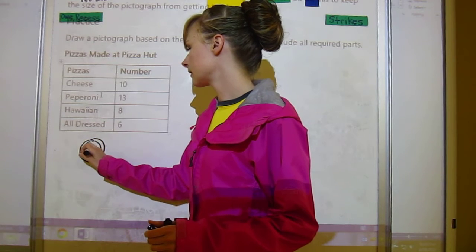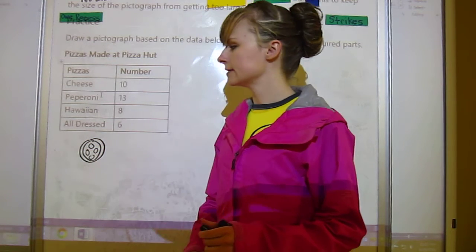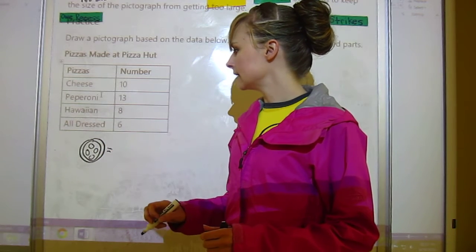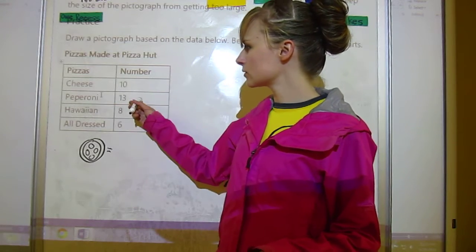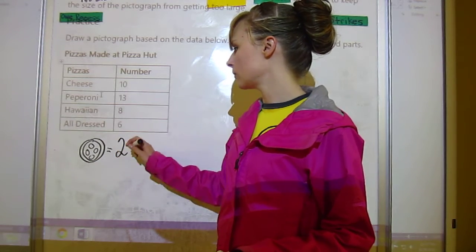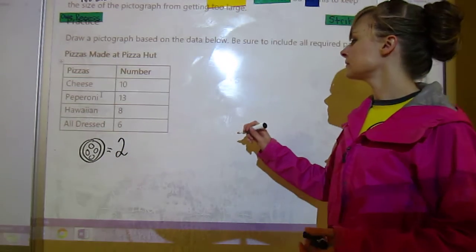I'm just going to make them all look the same or relatively the same. I'm going to use this and one pizza is going to represent - most of these are even numbers, there's only one odd, so I'd only have to draw one half pepperoni if I make them all equal to two.